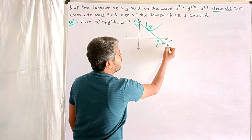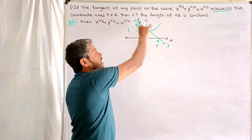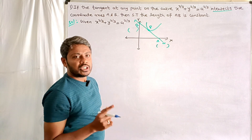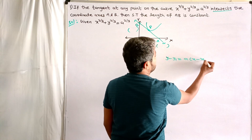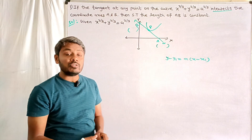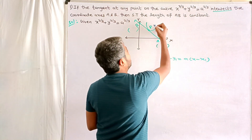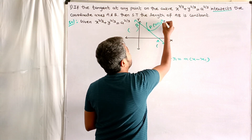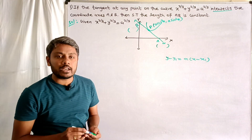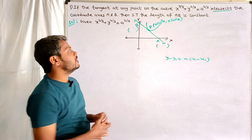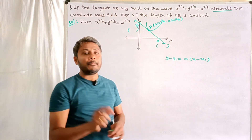We need to find the coordinates of A and B. First, find the tangent line equation. We know the equation of the tangent is y - y₁ = m(x - x₁). Consider the parametric point P as (a cos³θ, a sin³θ), which satisfies the given equation — this is called the parametric point.